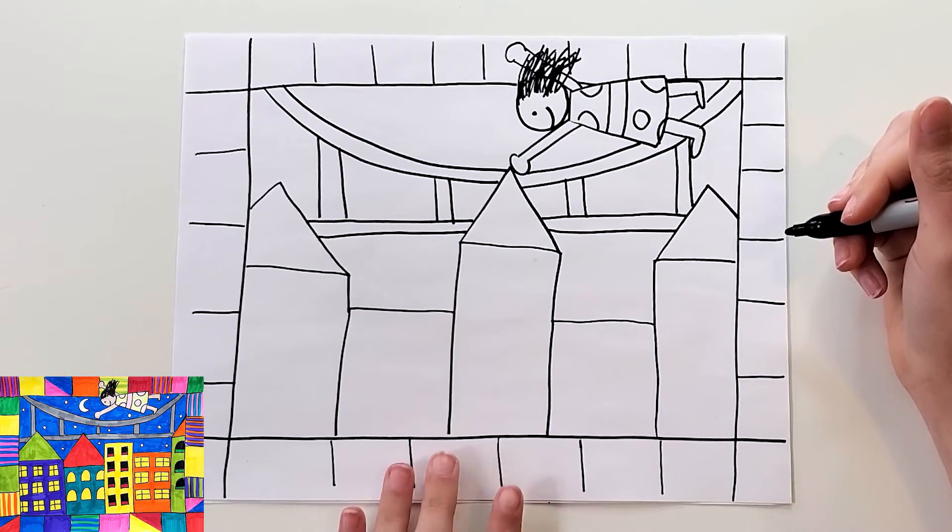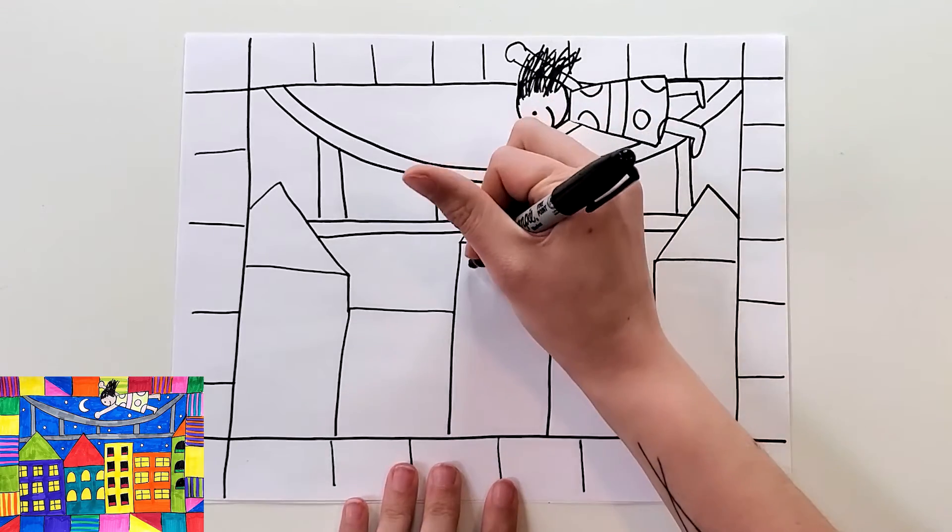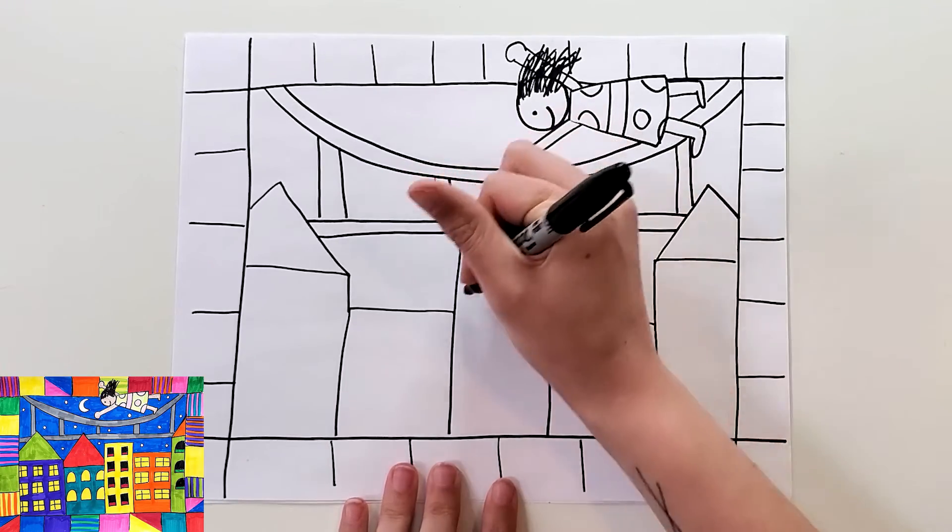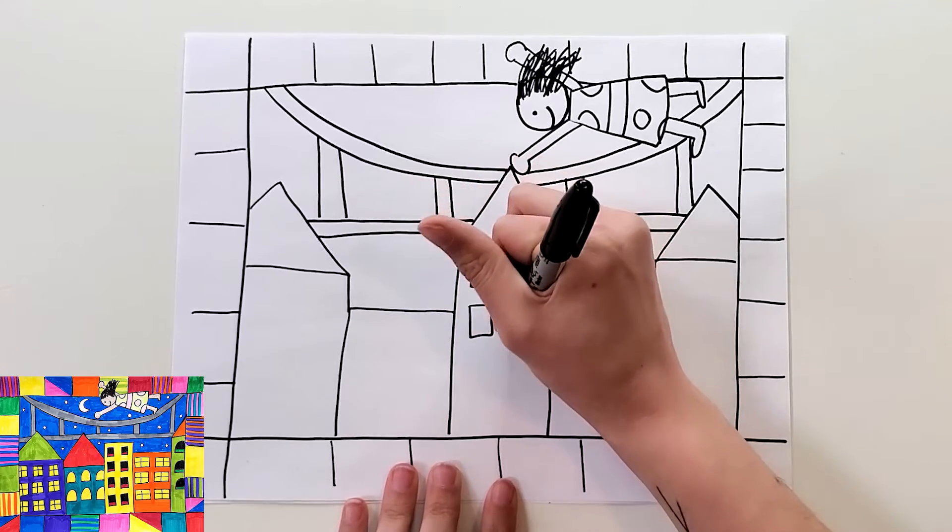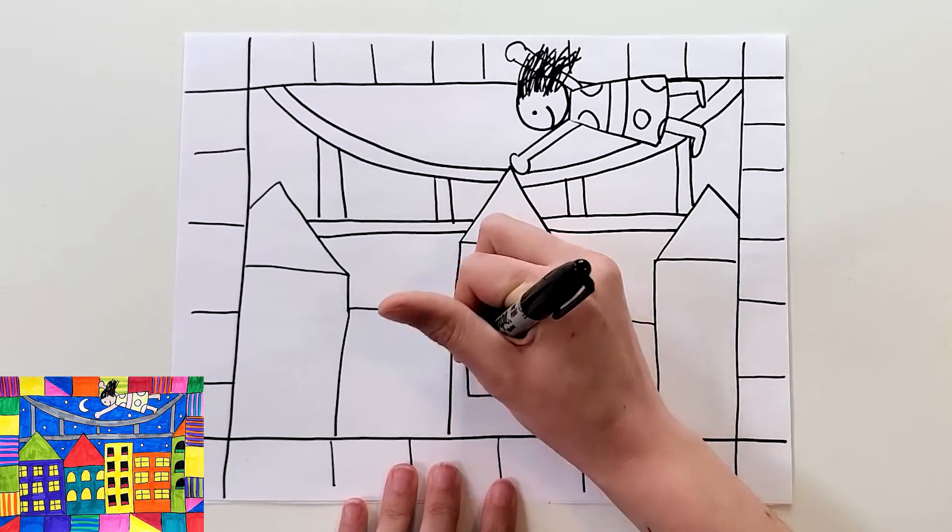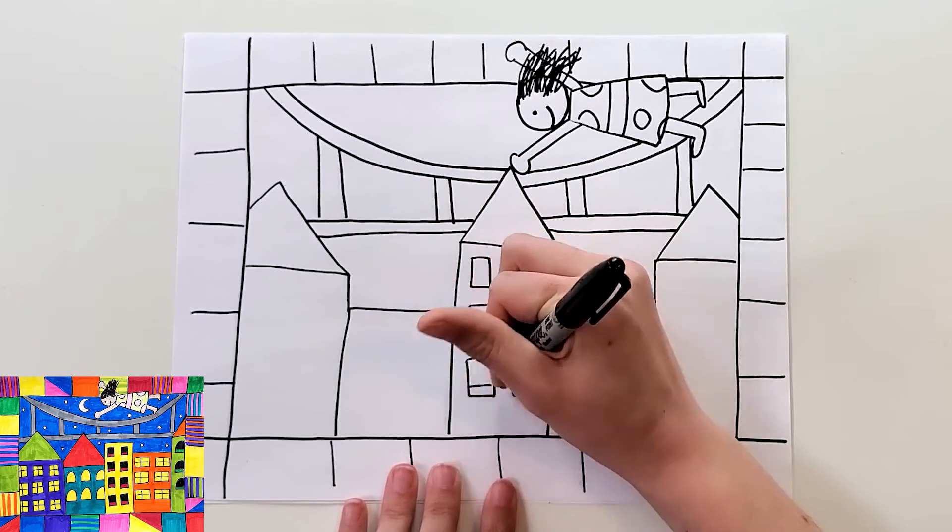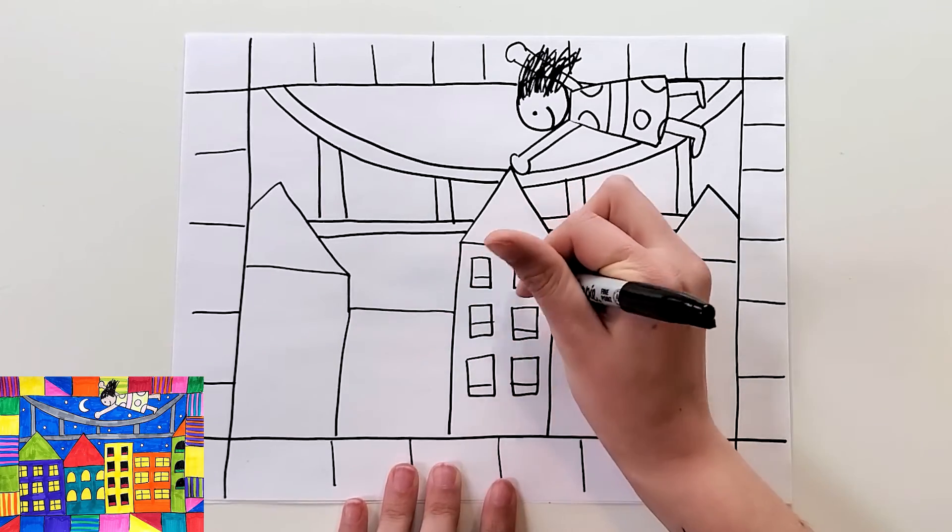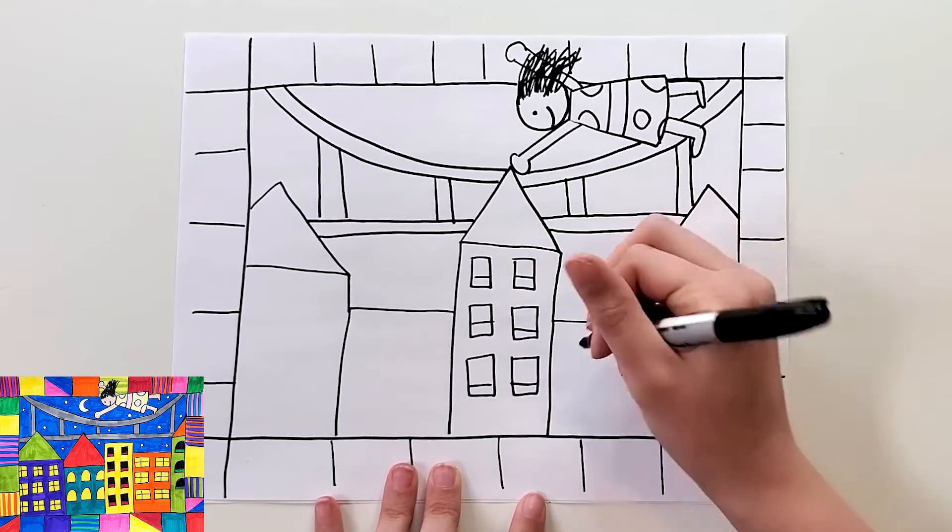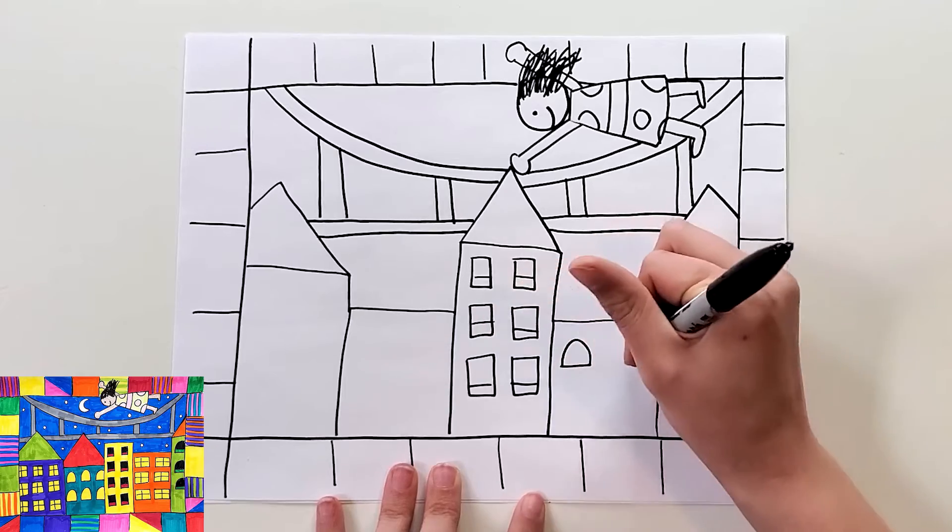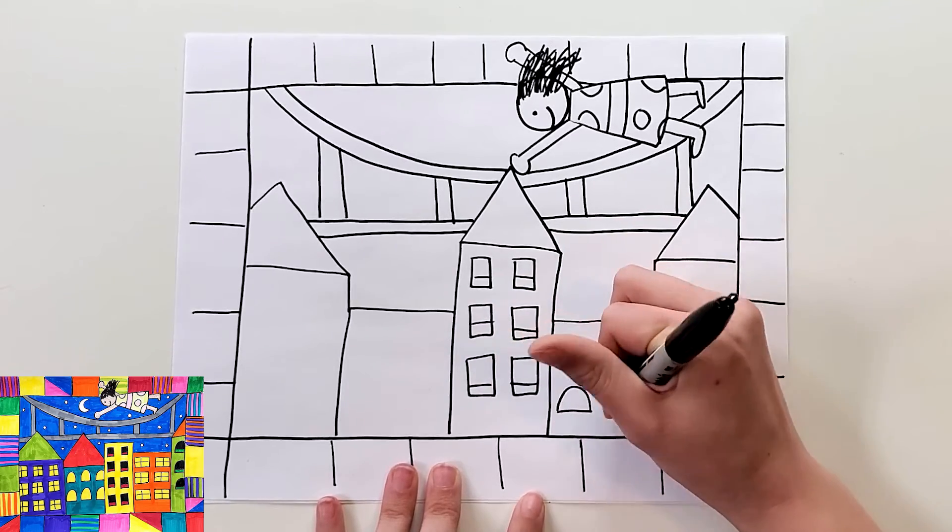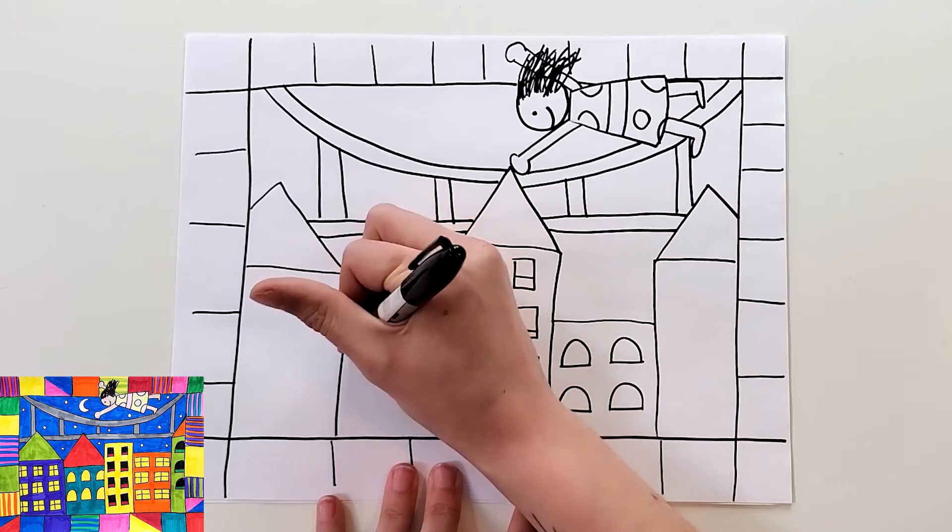Now I'm going to add some details. So I can add windows. You could try squares. Or a half circle. Or rectangles.